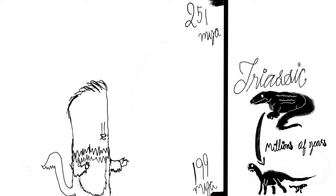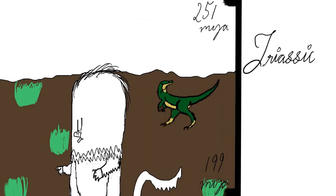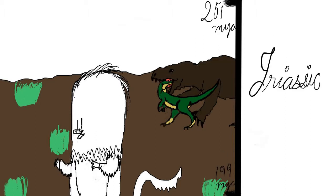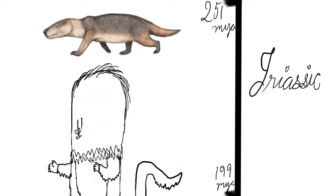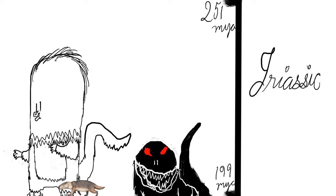But during the Triassic, dinosaurs were quite small, as they were not at the top of the food chain. Instead, crocodilians like Postosuchus were. Also during the Triassic, Cynognathus, an early mammal, evolved — although it was very small because, again, it was not at the top of the food chain.